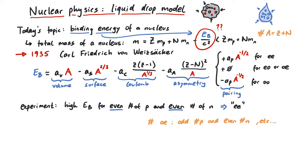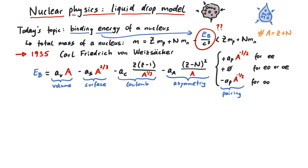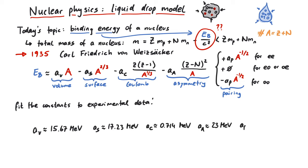Now we are almost done, we still need to fix those constants. Since there are five constants, we need to fit this to experimentally measured binding energies of five different nuclei. This has been done, and these are the approximate values. Notice, however, that the exact values here strongly depend on which five nuclei exactly we consider.